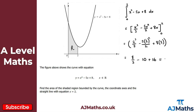Putting it into the calculator: 8 over 3 minus 10 plus 16 gives 26 over 3. Because we're talking about area, this is technically units squared, so the answer is 26 over 3 units squared — though we don't typically write the units when finding areas like this.